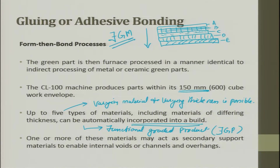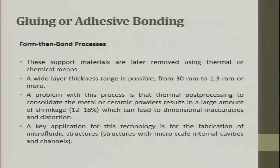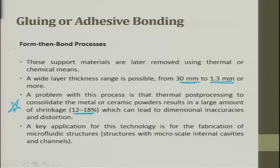One or more materials may act as secondary support material to enable internal voids, channels, and overhangs. These supporting materials are later removed using thermal and chemical means. A wide layer thickness range from 30mm down to 1.3mm is possible. A problem with this process is that thermal post-processing to consolidate the metal or ceramic powder results in large shrinkage of 12 to 18 percent, which can lead to dimensional inaccuracies and distortion. Shrinkage may not be uniform — the part can warp. This is a very important concern in form-then-bond processes.